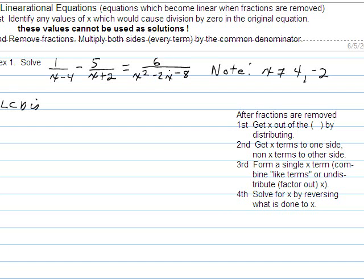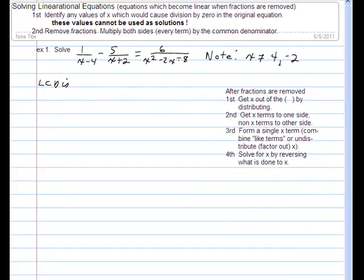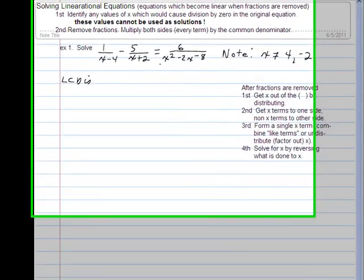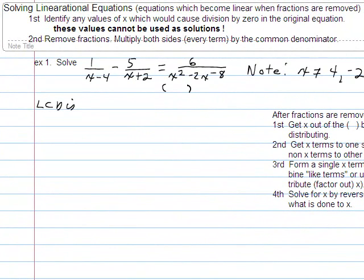Now take a look at the third fraction. The third fraction, the denominator, is very complicated looking. So it's much harder to tell what values of x would cause division by zero. So we're going to factor it. Since it's three terms, we'll try to un-foil it.